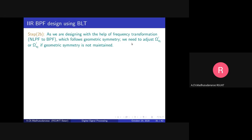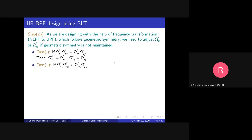For the LP-to-BP frequency transformation to maintain geometric symmetry, we may need to adjust omega_s1' or omega_s2'. Case 1: if omega_s1' times omega_s2' equals omega_p1' times omega_p2', then geometric symmetry is maintained perfectly and no adjustment is needed. Case 2: suppose omega_s1' times omega_s2' is less than omega_p1' times omega_p2'. Then we need to adjust one of them. It is better to increase omega_s1' instead of omega_s2', because increasing omega_s1' decreases the left-side transition band, which is better for us.